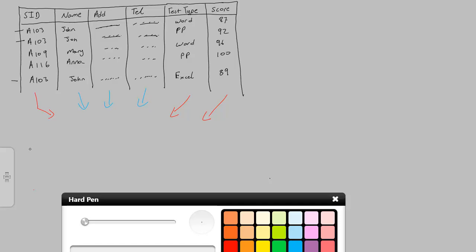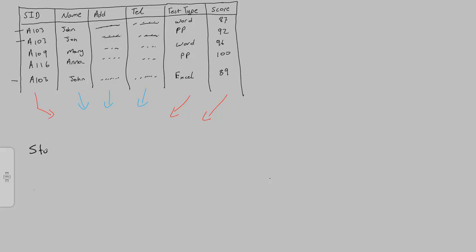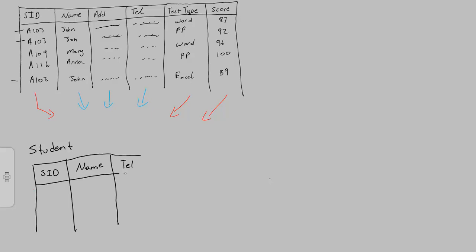I'll create a smaller table for student information — we'll call this the student table. In this table we would hold the SID (student identification), the name, the address, and the telephone number. If we were saving more data, that would also be added here. So for student John his SID is A103, name is John, and we have his telephone number and address.